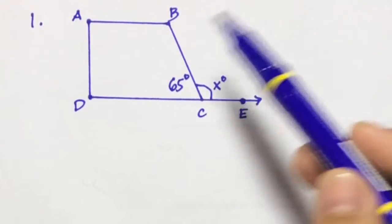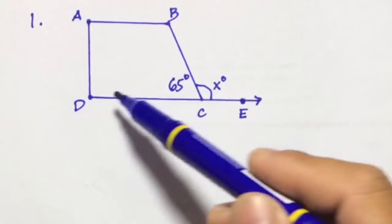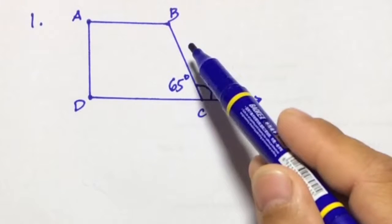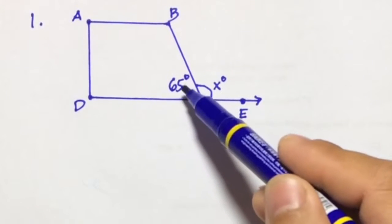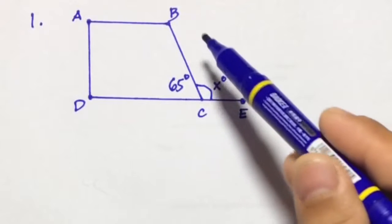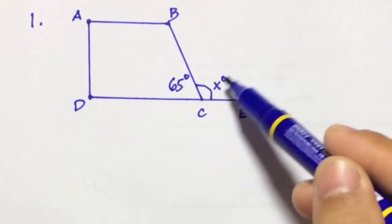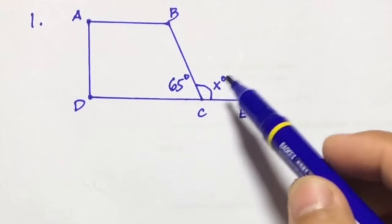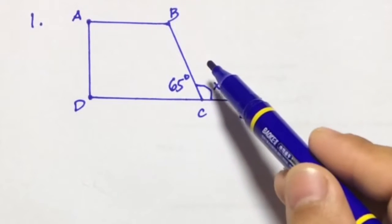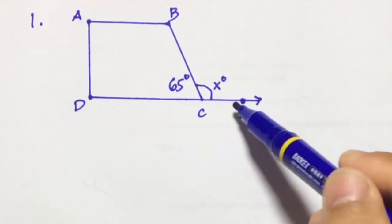Example number one. We have a quadrilateral A, B, C, D with angle BCD equal to 65 degrees, and the exterior angle BCE equal to X degrees. We are going to find the value of X, which is the measure of angle BCE.